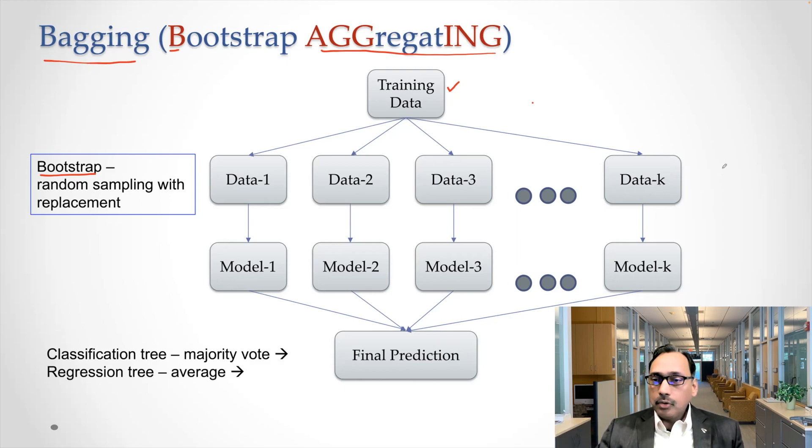And you can have a number of them. And in fact, most of the algorithms use a default value of 500. So you're not looking at one tree, but we may end up with 500 trees because we are repeating this process 500 times.